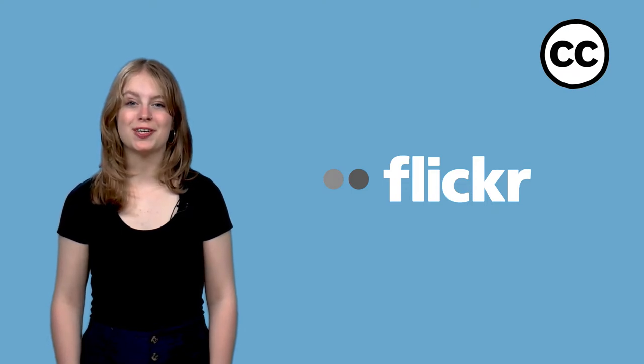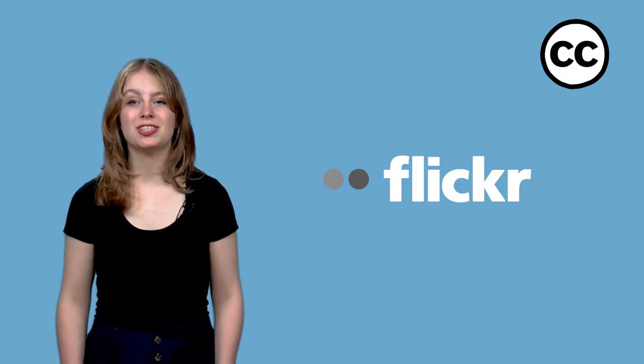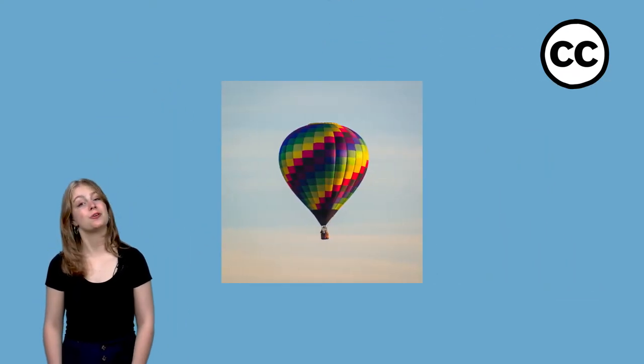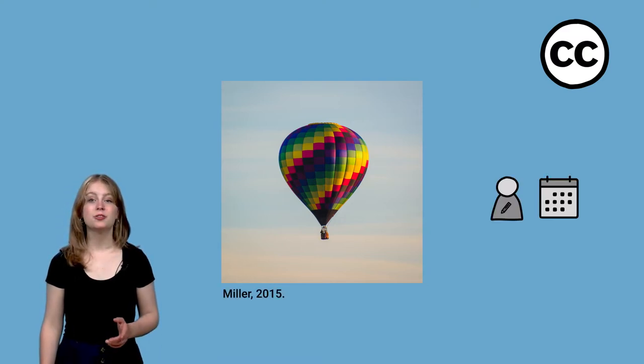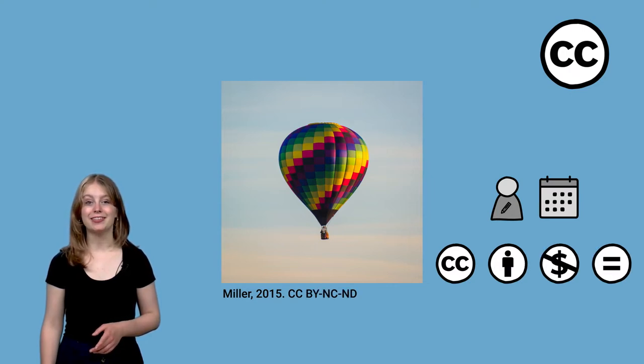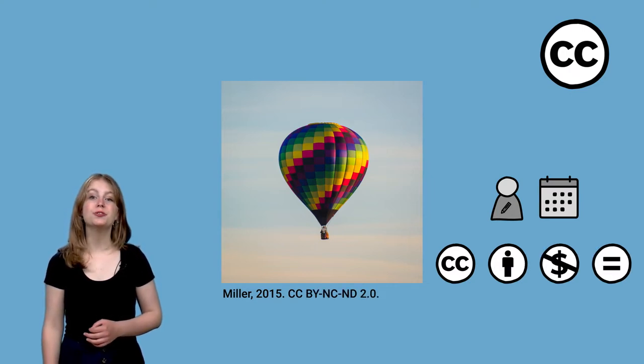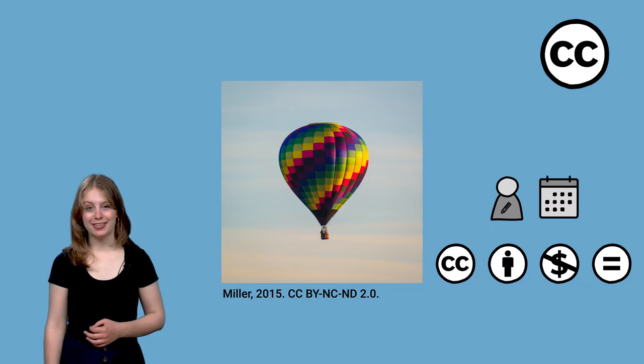Flickr is an example of a website where you'll find numerous images with a CC license, such as this one with a hot air balloon. Below the image stated Miller 2015, CC by NC ND 2.0. You could use a smaller font if you wish to make it stand out less.